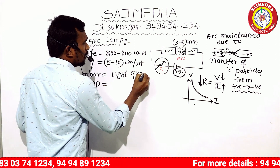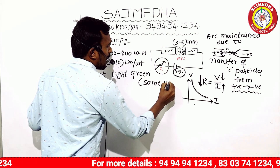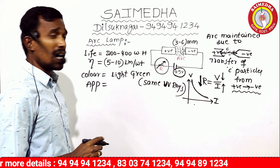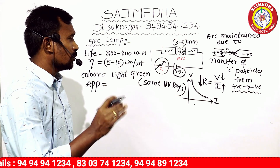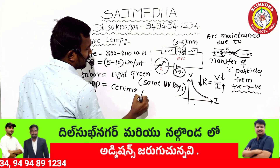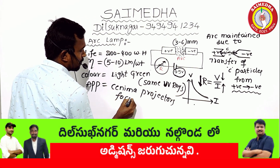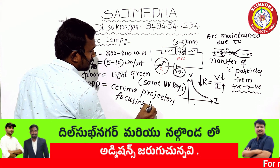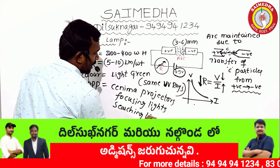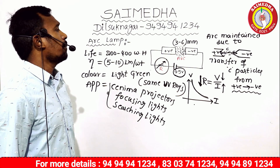The light from the arc lamp is similar to UV rays. The arc lamp light behaves like UV rays. Applications: cinema projectors, focusing lights, and searching lights — these are the arc lamp applications.